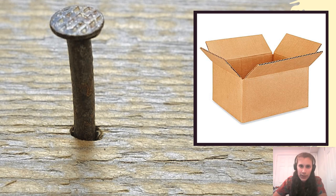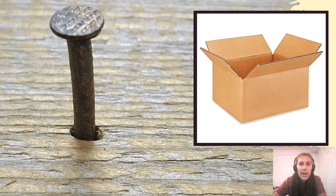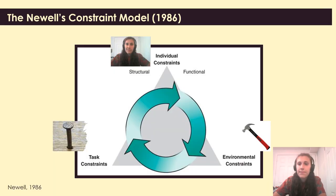So you probably see where I'm going with this. This simple example gives you an idea of how objects have unique associated properties such as texture, size, weight, and density, and these properties influence the actions available on an object and the task that can be performed. All these principles are linked together by the Newell Constraints model, which states that actions are influenced by intrinsic aspects like individual characteristics of the performer, and extrinsic aspects like the requirement of the task and the features of the object available to solve it.